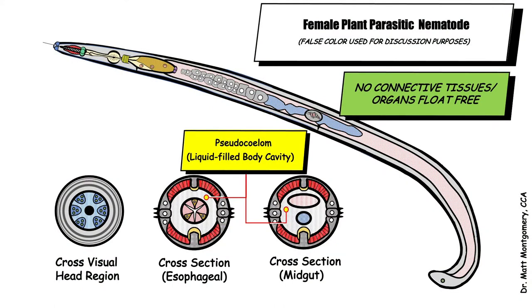Nematodes are kind of different than some of the other animals you and I are used to. Even though they look kind of like earthworms because they have that worm-like structure to their body, they're actually very, very different. An earthworm has organs, and those organs within its body cavity are stitched together with tissues. You and I have a body cavity and our organs are kind of stitched together with tissues too. A nematode is not like that. A nematode is basically a bag of water with organs floating around loosely within it.